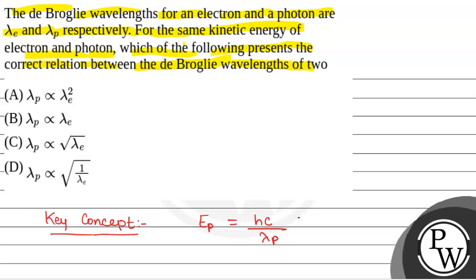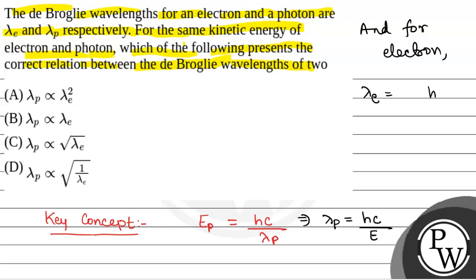From here, lambda of photon will be equal to hc by E, where E is the energy of the photon. And for the electron, lambda_e is equal to h by root over 2mE. From here we can see lambda of electron is directly proportional to 1 by root E, that is, it is inversely proportional to root over E.